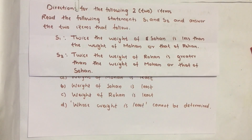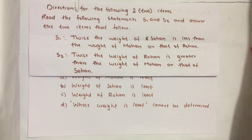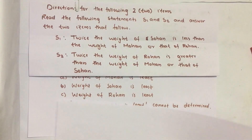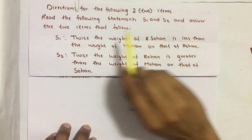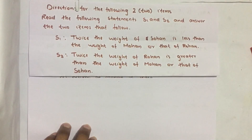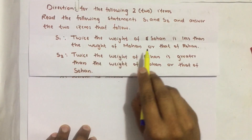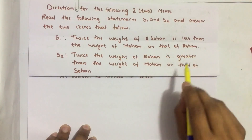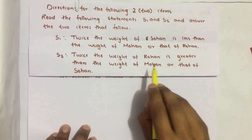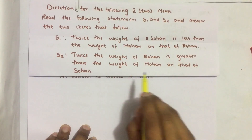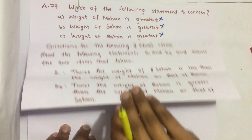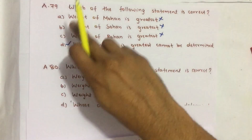Hello everyone. I am going to solve 2019 CSAT question number 79 and 80. Read the following statements S1 and S2 and answer the two items that follow. Statement 1: twice the weight of Sohan is less than the weight of Mohan or that of Rohan. Statement 2: twice the weight of Rohan is greater than the weight of Mohan or that of Sohan.